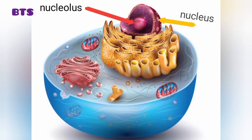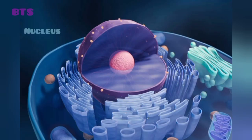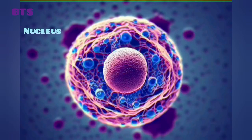The most integral component of the cell is the nucleus, plural: nuclei. It is derived from a Latin word which means kernel of a nut. Only eukaryotes have the nucleus; prokaryotes have the nucleoid.